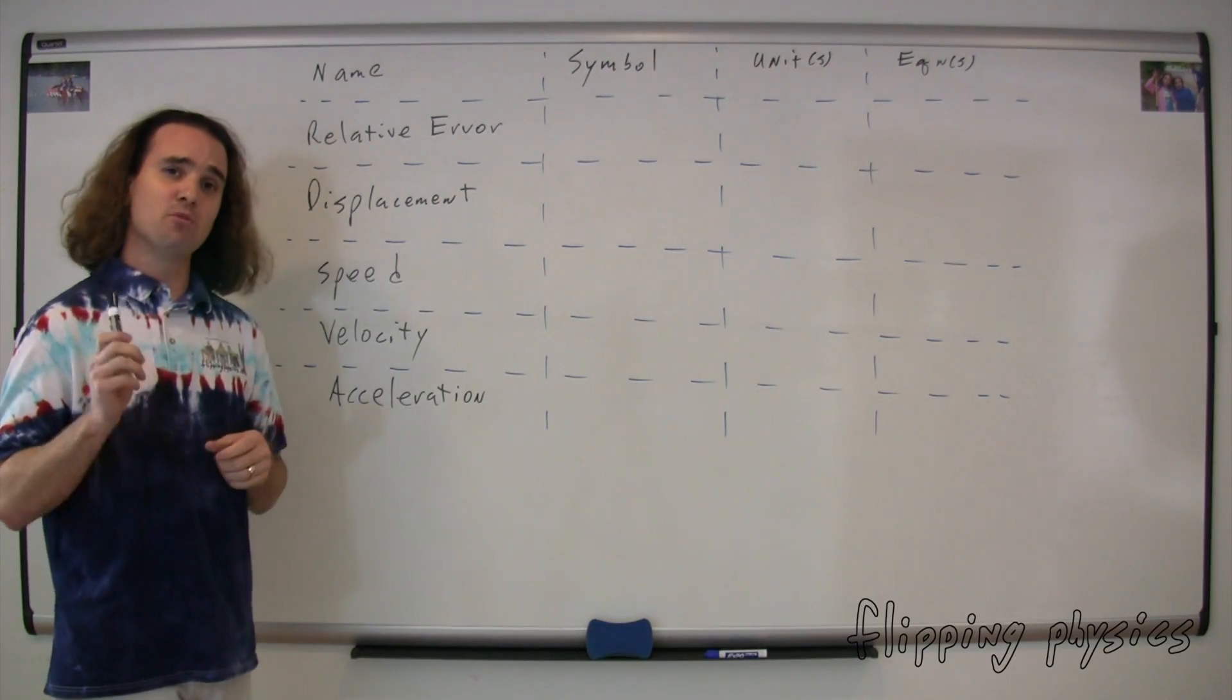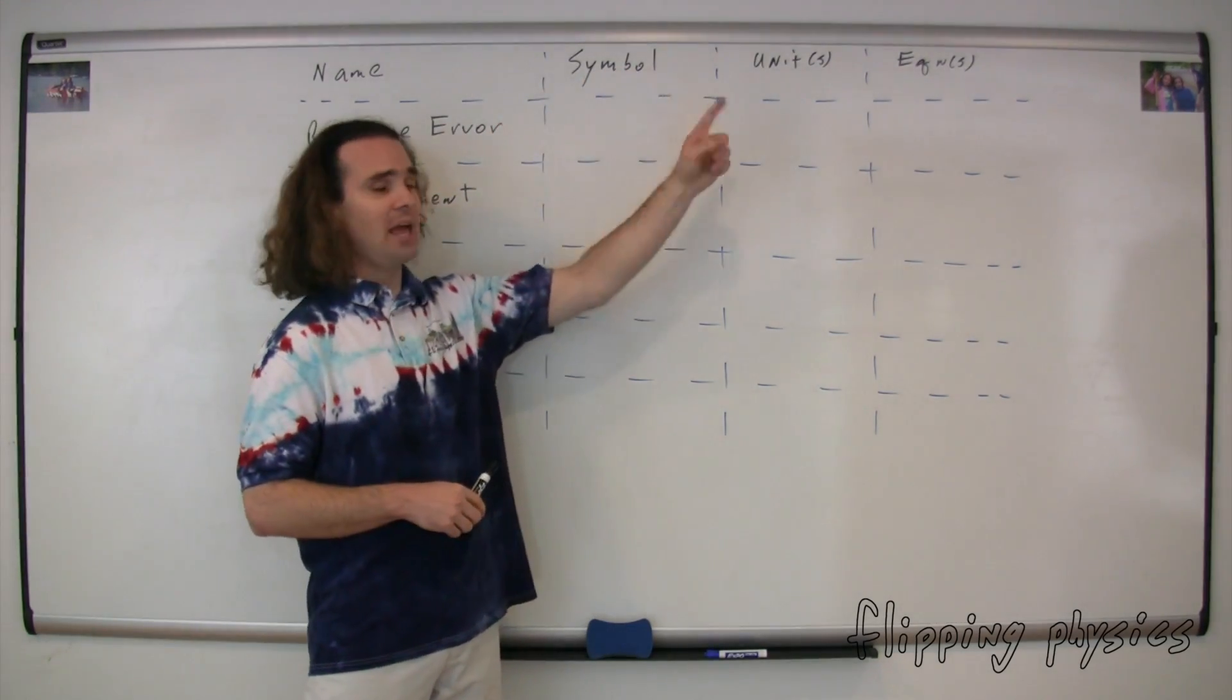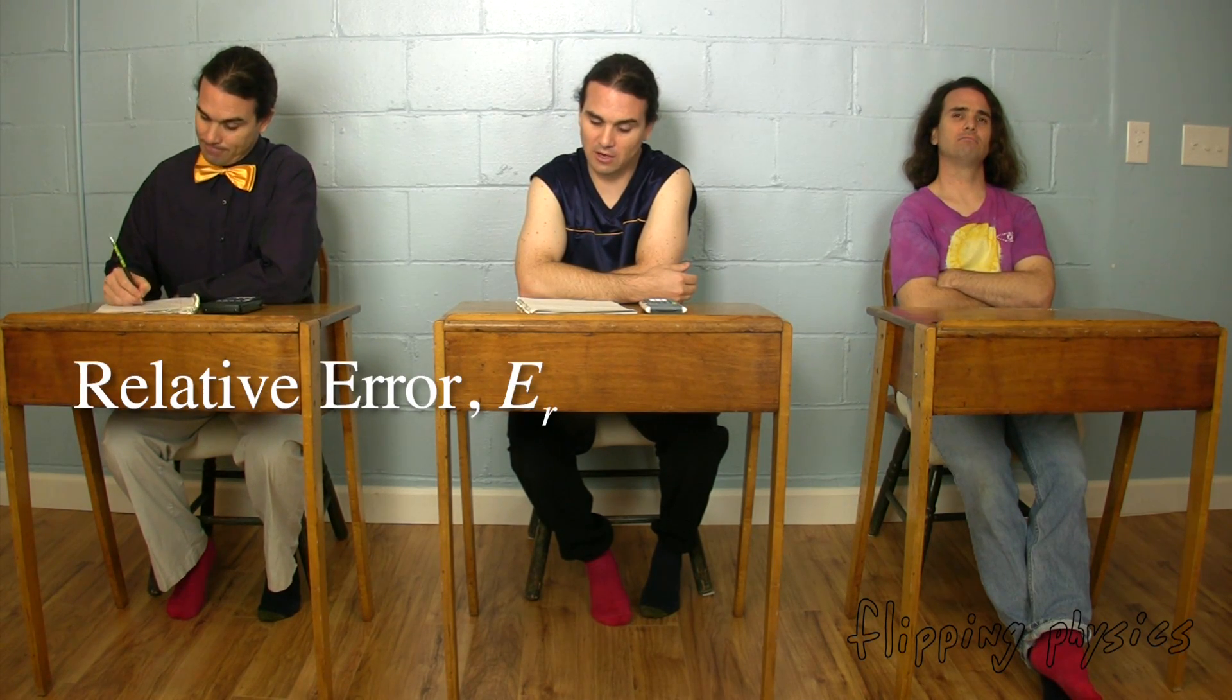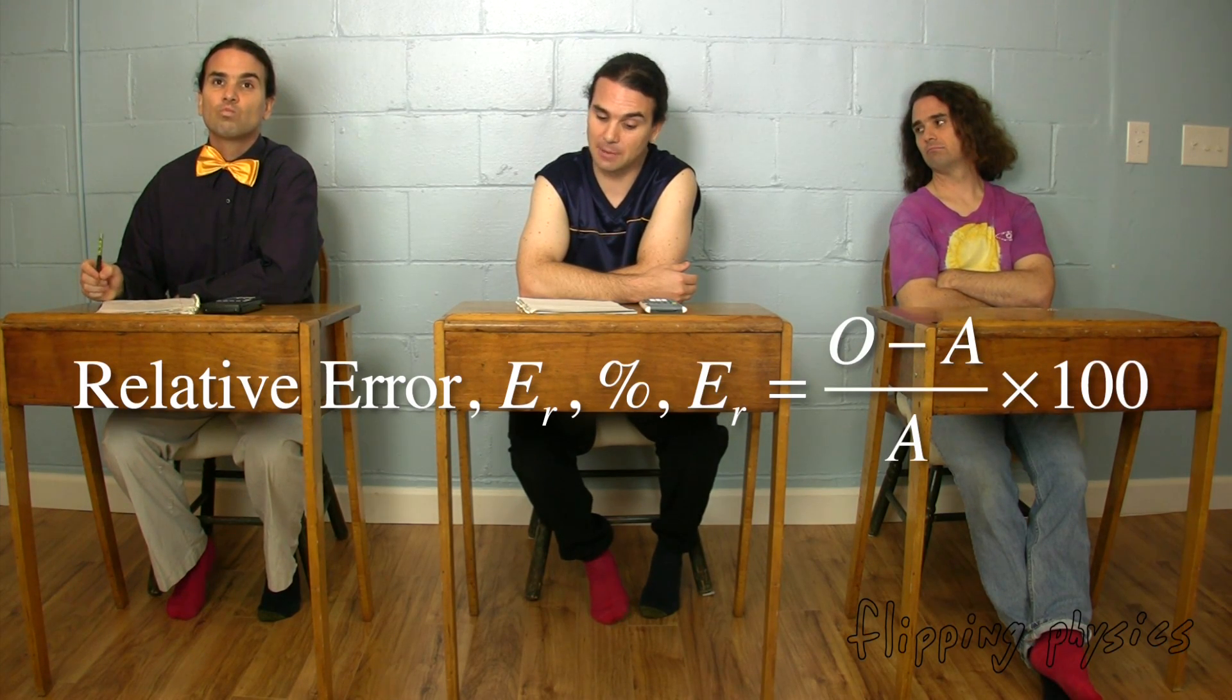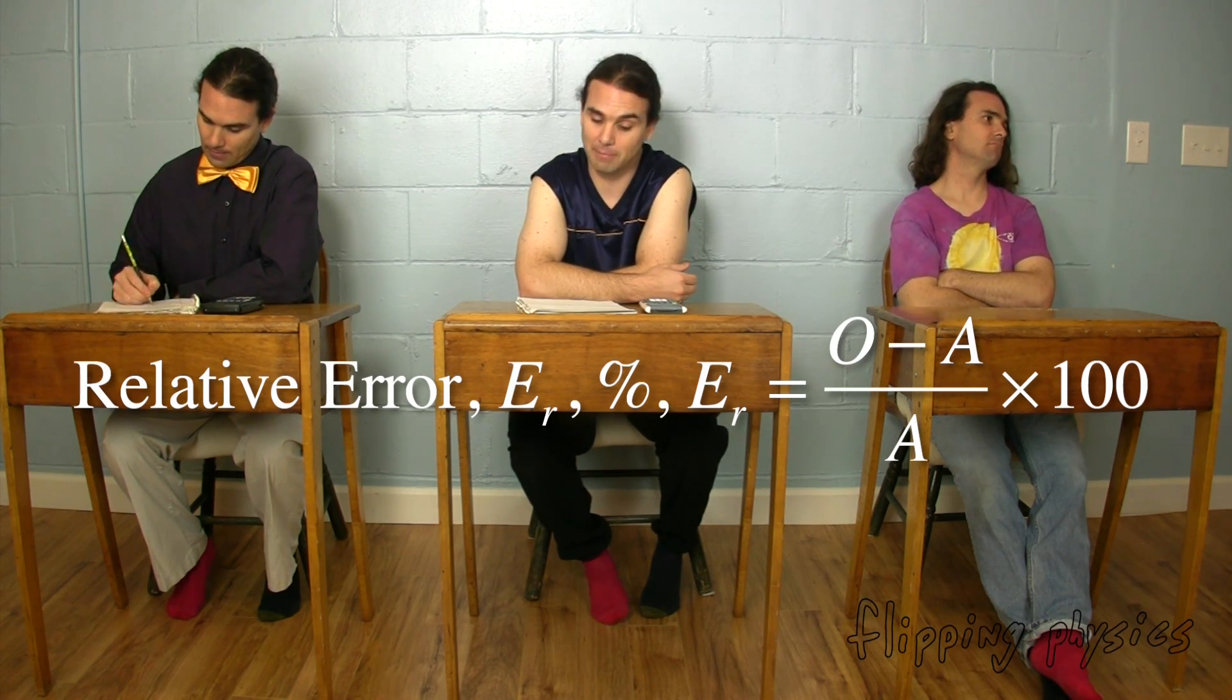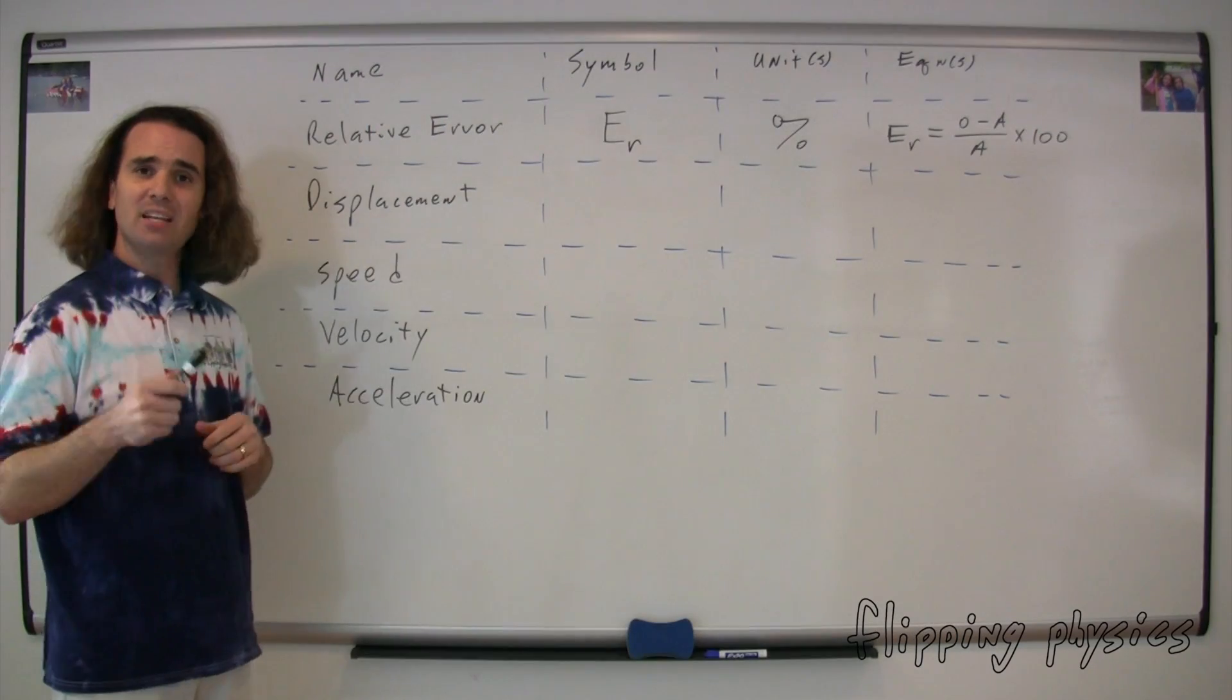Let's start at the top and move left to right. Bobby, for relative error, can you please give me the symbol, unit, and equation? The symbol for relative error is capital E sub R. The dimensions are percent. And the equation is the relative error equals the observed value minus the accepted value, that quantity divided by the accepted value, and the whole quantity multiplied by 100. Yes, Bobby.